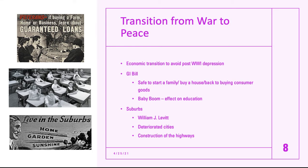Levittown had swimming pools, shopping centers, and large backyards with white picket fences — and all the houses were built exactly the same, like Ford with the car, mass-producing housing using assembly line style construction. The effect the suburbs had was a deterioration of the cities — when people moved out they took their tax money with them. This also led to the construction of the highways we still use today, connecting the suburbs and the cities.